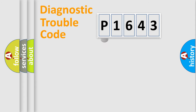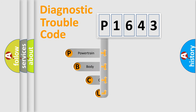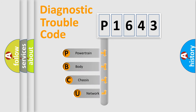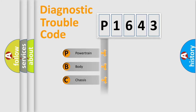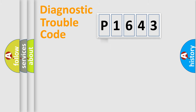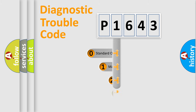First, let's look at the history of diagnostic fault code composition according to the OBD2 protocol, which is unified for all automakers since 2000. We divide the electric system of an automobile into four basic units: Powertrain, Body, Chassis, and Network. This distribution is defined in the first character of the code.